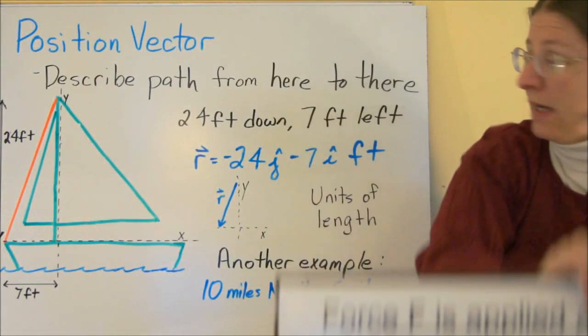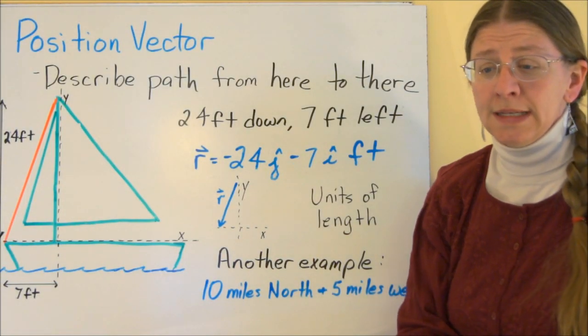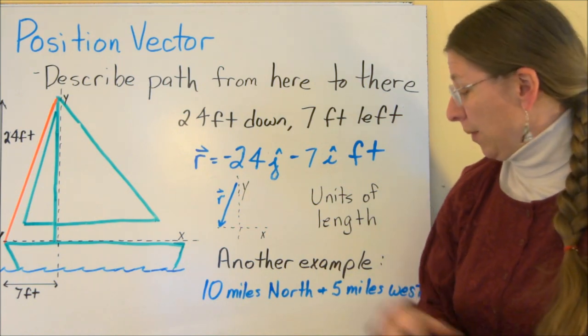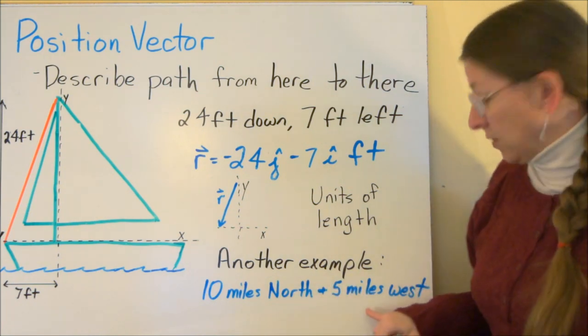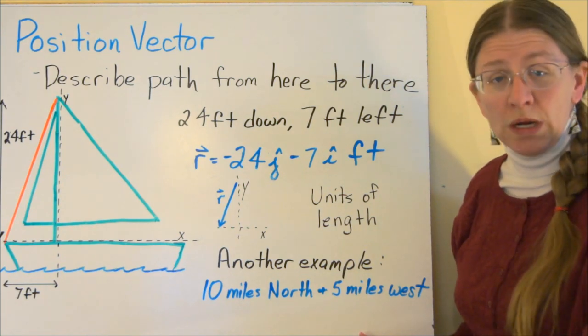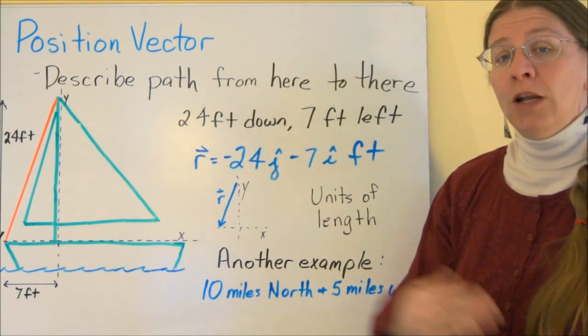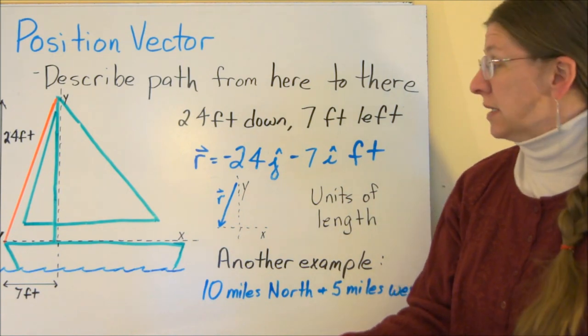To do that, I want to start by defining the notion of a position vector. A position vector is like that example I gave you. I'm going to go ten miles north and five miles west, something along that line. So I'm saying go in this direction for a certain distance. It's a path from here to there. That's what a position vector is.